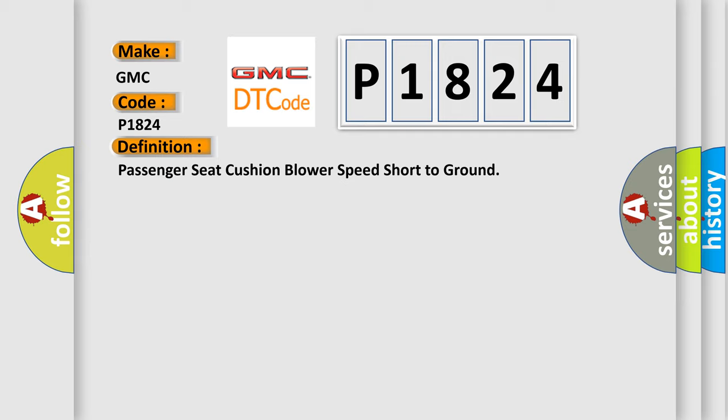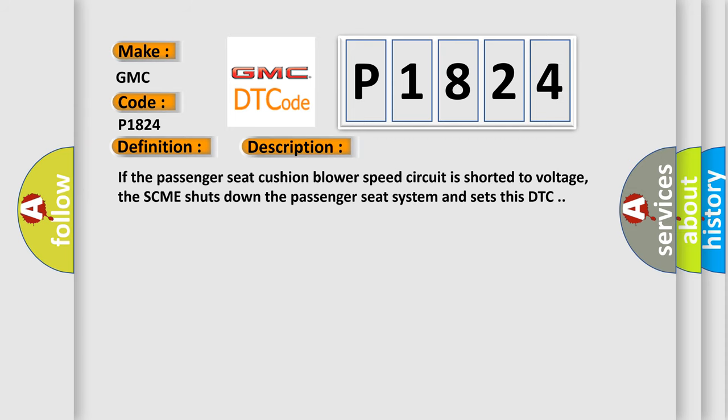And now this is a short description of this DTC code. If the passenger seat cushion blower speed circuit is shorted to voltage, the SCME shuts down the passenger seat system and sets this DTC.